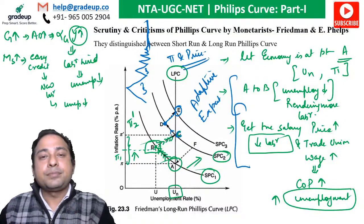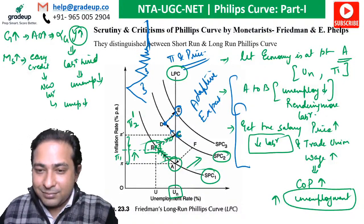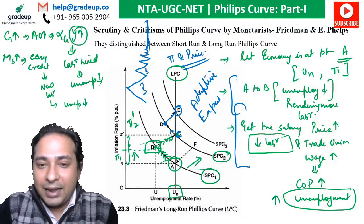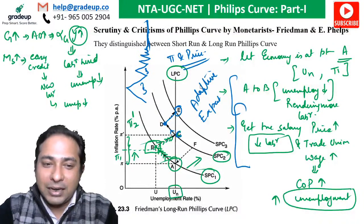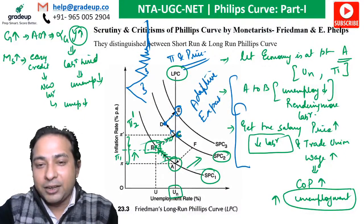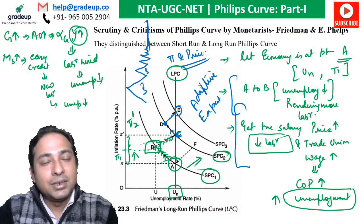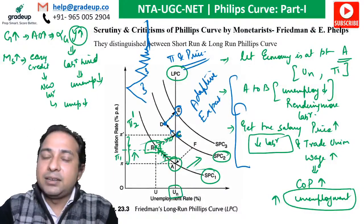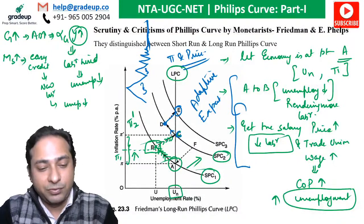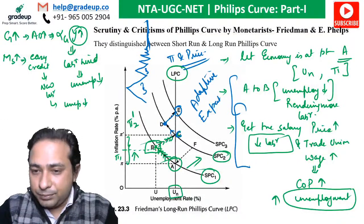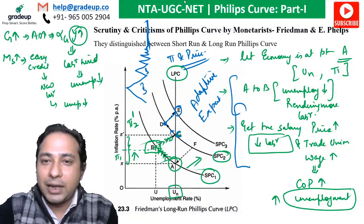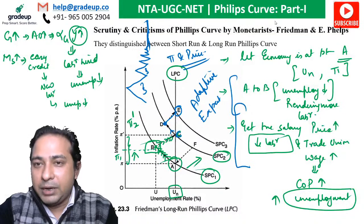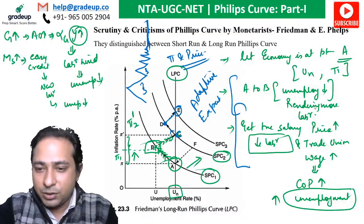So now we know: in the short run there is an inverse relationship between unemployment and inflation (the short-run Phillips curve), but in the long run, because of adaptive expectations, the Phillips curve is vertical — there is no relationship. Now I'll answer the quiz: which point is the natural rate of unemployment (NRU) and which is NAIRU? Let me go to the next slide to answer that.